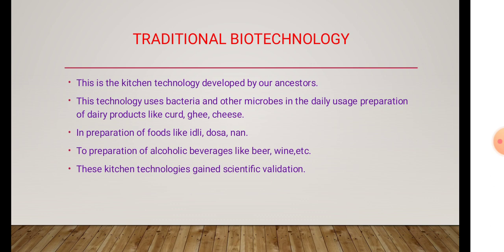Next, we will study traditional biotechnology in detail. Traditional biotechnology is a kitchen technology, followed by our ancestors, using bacteria and microbes. They are used in the preparation of daily products like curd, ghee, and cheese. In the preparation of foods like idli and dosa, and in the preparation of alcoholic beverages like beer and wine — these are traditional methods of biotechnology. This type of kitchen technology now has scientific validation.